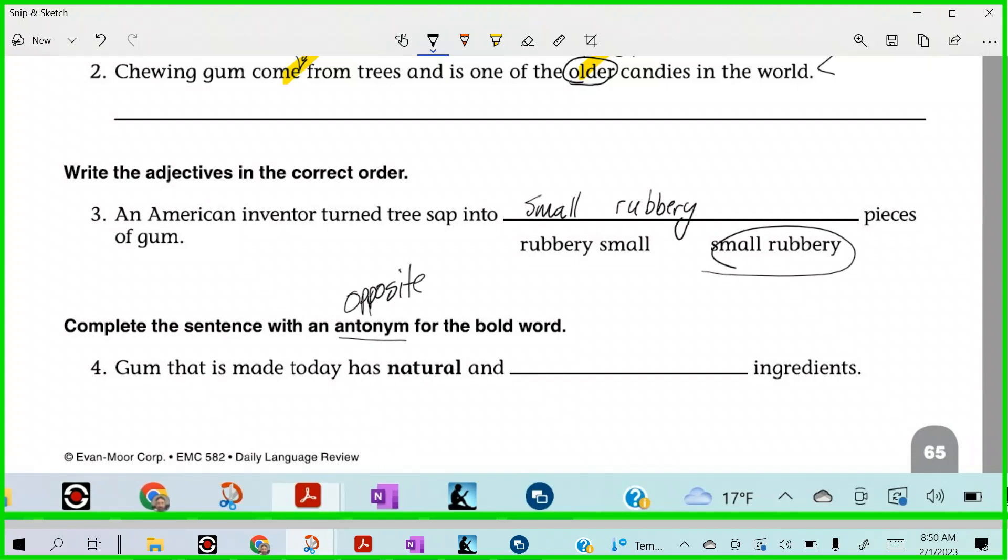All right. So, gum that is made today has natural and... yeah, I like unnatural. That works. Is there another word though that would fit there? Unnatural. Natural and unnatural or... yeah, artificial would be another one. Right? Gum that is made today has natural and artificial ingredients or natural or unnatural ingredients. Very good.